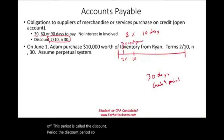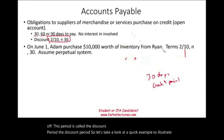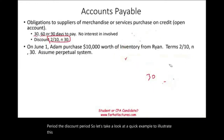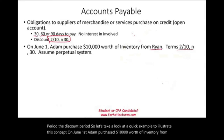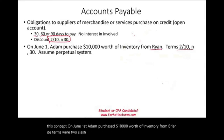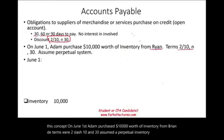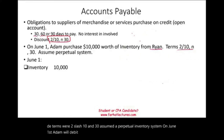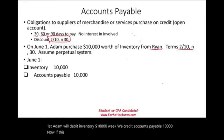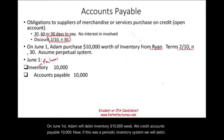Let's look at a quick example. On June 1st, Adam purchased $10,000 worth of inventory from Ryan on terms of 2/10, n/30, using a perpetual inventory system. On June 1st, Adam will debit inventory $10,000 and credit accounts payable $10,000. Under a periodic inventory system, we would debit purchases instead.